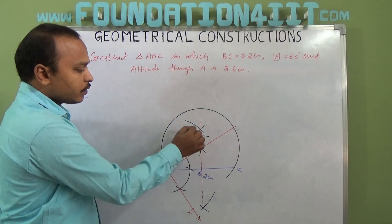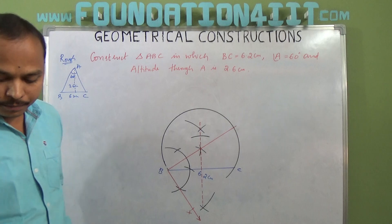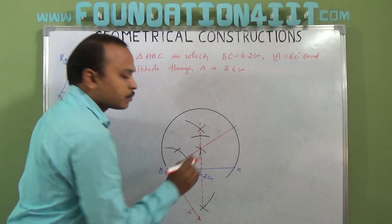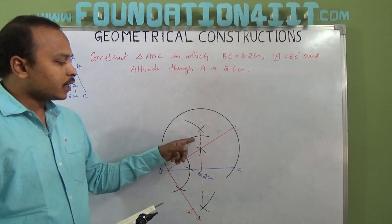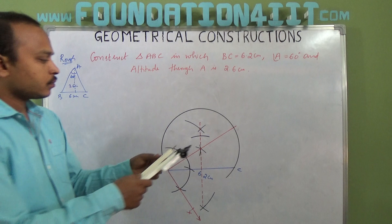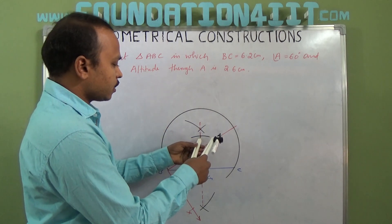At the point where the 2.6 cm arc intersects, construct 90 degrees, which means drawing a line exactly parallel to BC. I am constructing 90 degrees at this point.